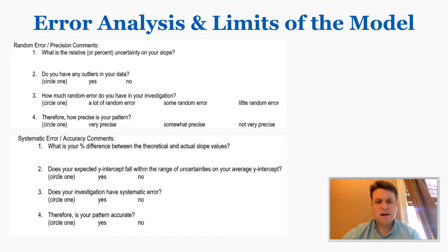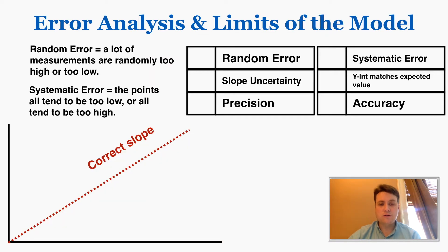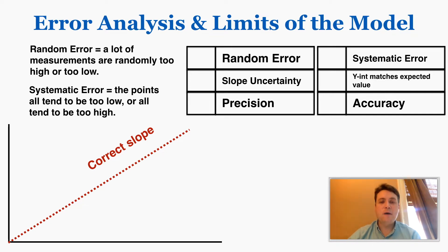Random error means a lot of measurements are randomly too low or too high, so there's no pattern to the errors in your data. Some of them are lower than what you would expect, some are higher, and there's no pattern to whether they're low or high. It's just a random combination.